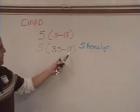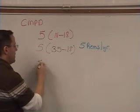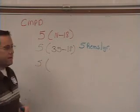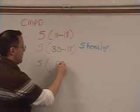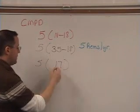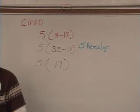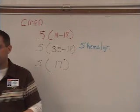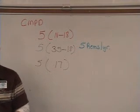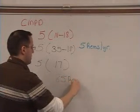So here we have 35 minus 18. What is that? How many years is that? That's about 17 years, right? So 17 times 5. Anybody do that in the calculator? 85.